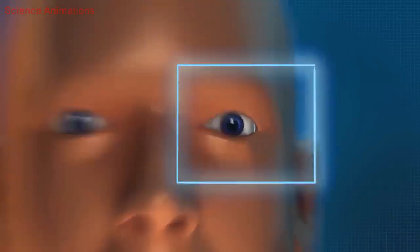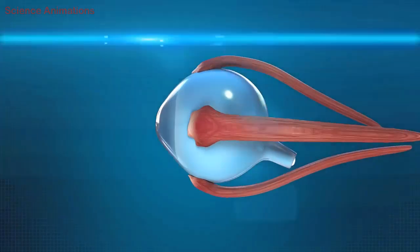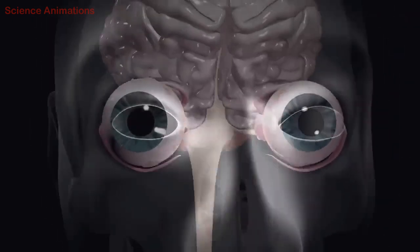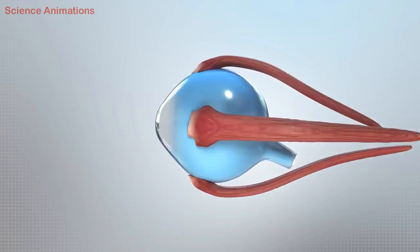The human eye is a specialized sense organ that has the ability to receive visual images. These visual images are then transmitted to the brain.